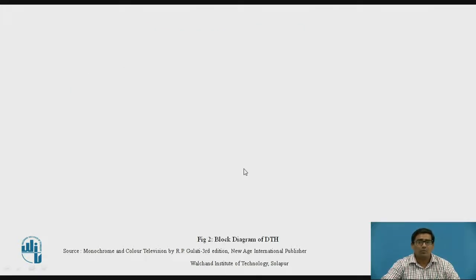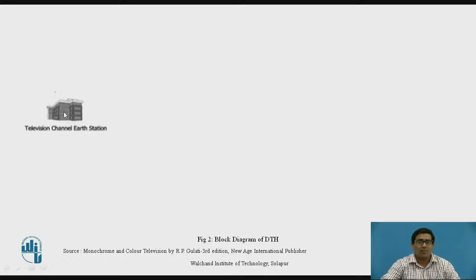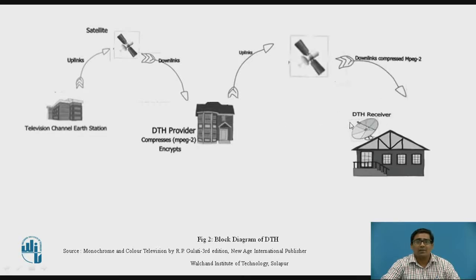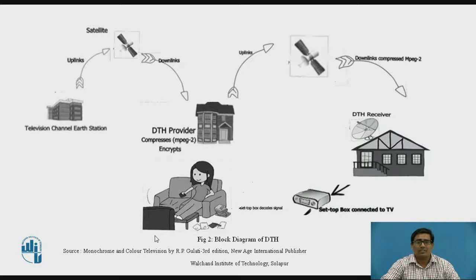Figure 2 shows the block diagram of the DTH. The television channel or station is where the programs are recorded. After that, they are uploaded through the satellite and downloaded towards the DTH provider company. The encryption technique used is MPEG-2. The DTH then provides the signal to the consumer — it uploads the program through the satellite, which is downloaded into the DTH receiver located at home or office. The signal then goes to the set-top box and through modulation and demodulation techniques is received on the TV channel for the consumer.